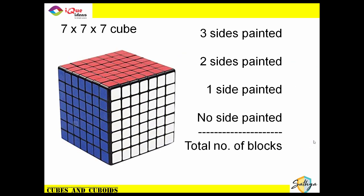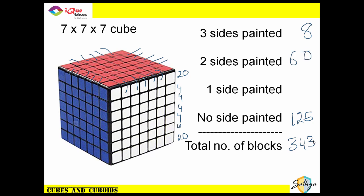For a 7x7x7 cube: total 7×7×7 = 343 blocks. Three sides painted: 8. Zero sides painted: (7−2)×(7−2)×(7−2) = 5×5×5 = 125. Two sides painted: counting edges, there are 20 blocks on the edges per layer and across layers. One side painted: 5×5 per face = 25, times six faces = 150. Adding all these numbers gives 343.